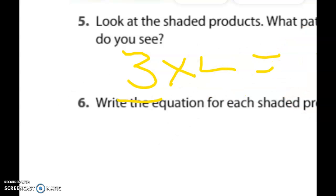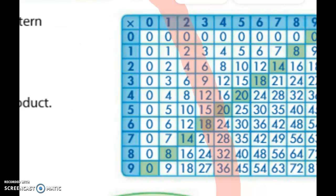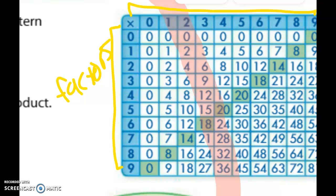The next one is to write an equation for each shaded product. So let's look back at our chart. Remember, these on the side are our factors, the numbers we multiply. Those are both factors. Everything in the dark blue and everything in the middle are the products.